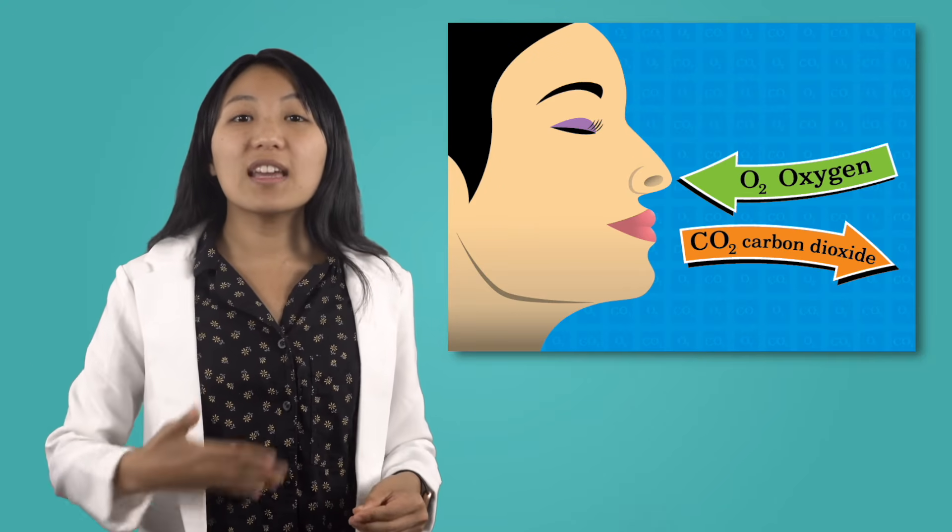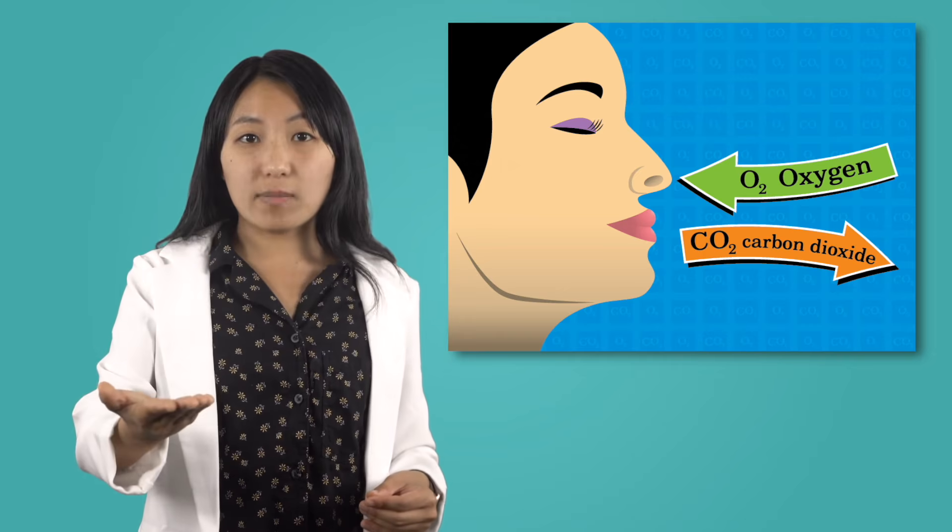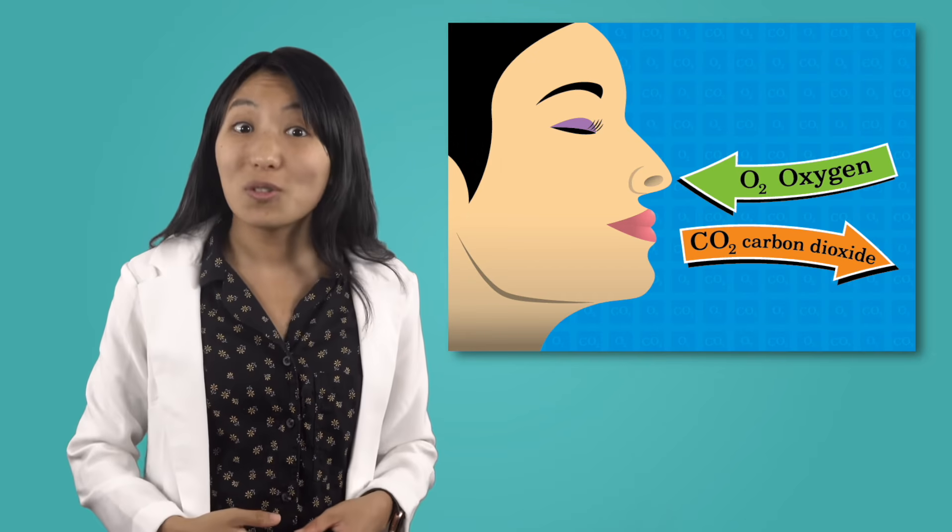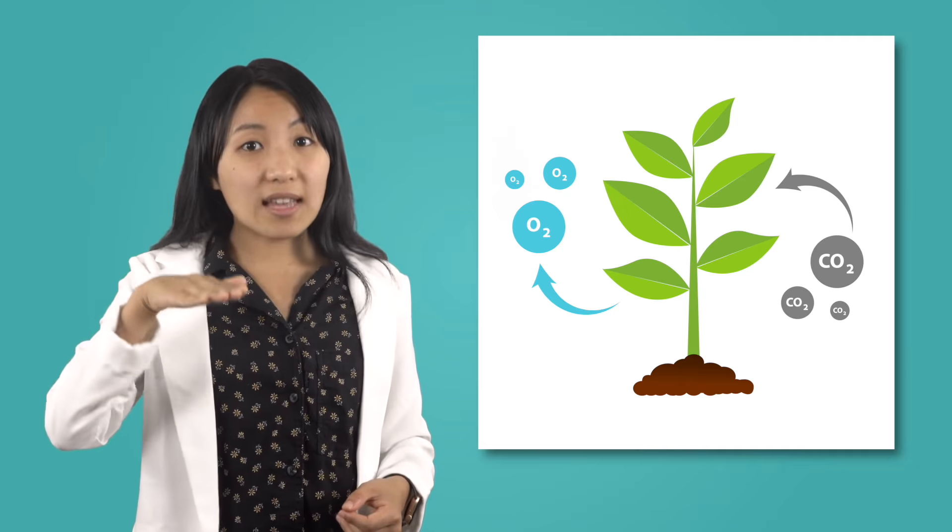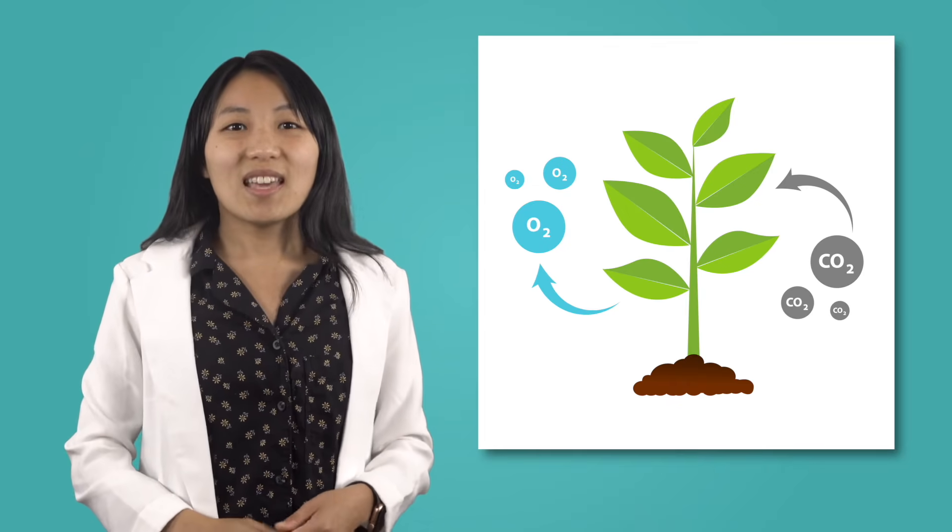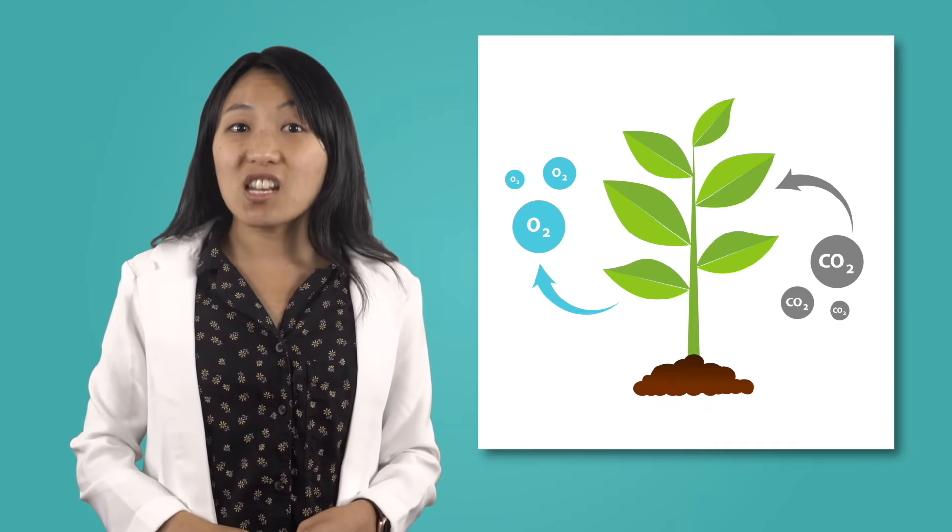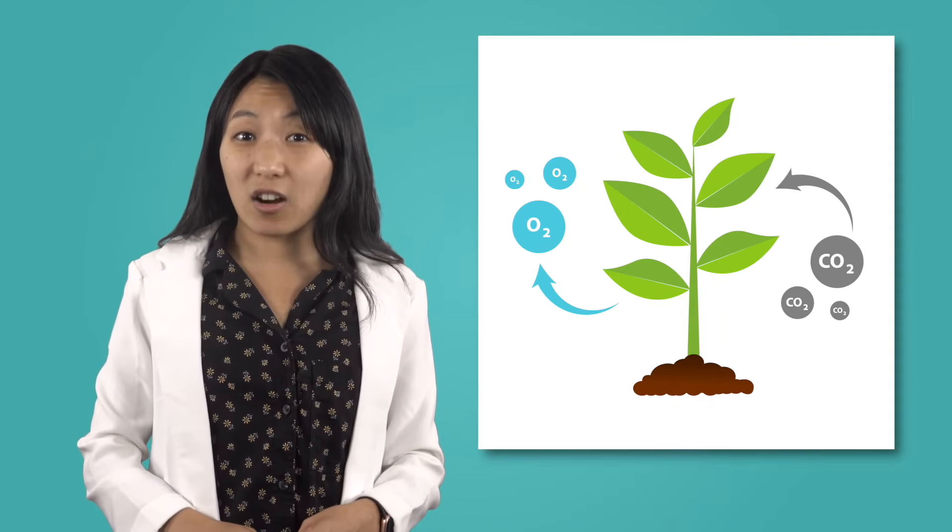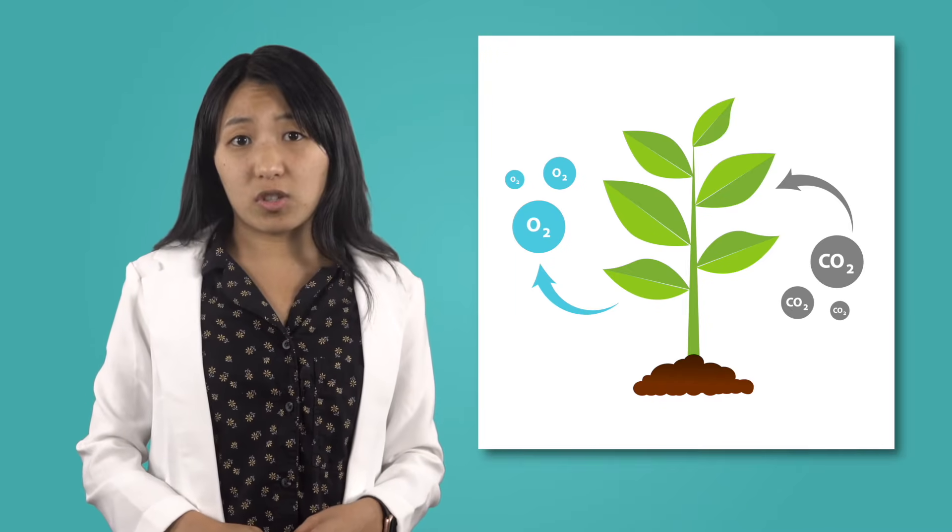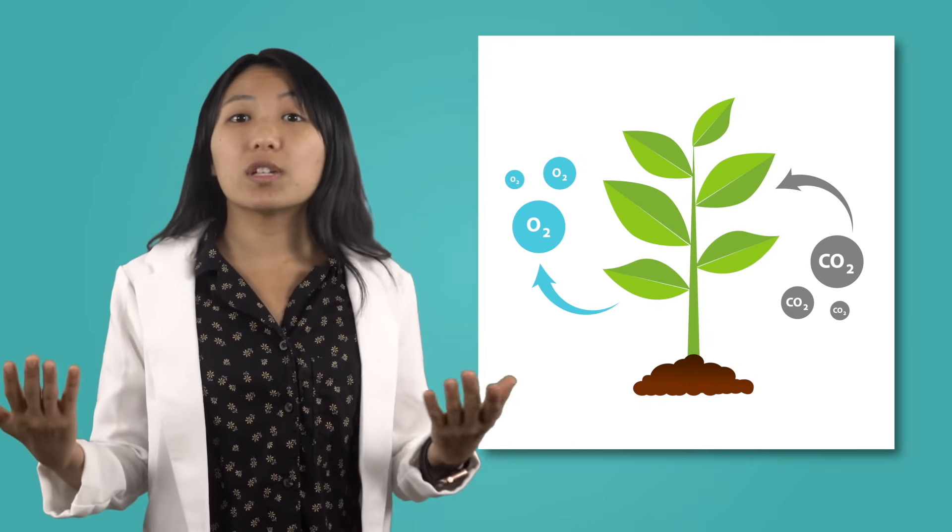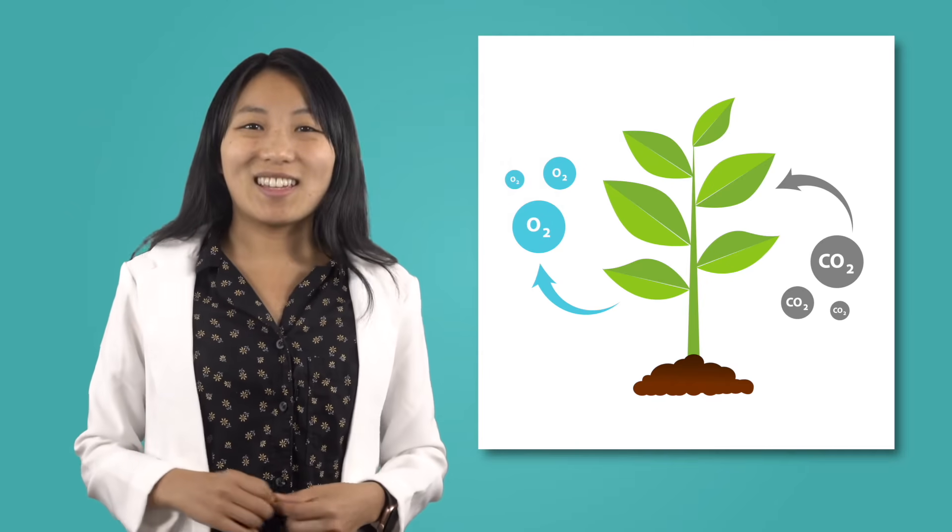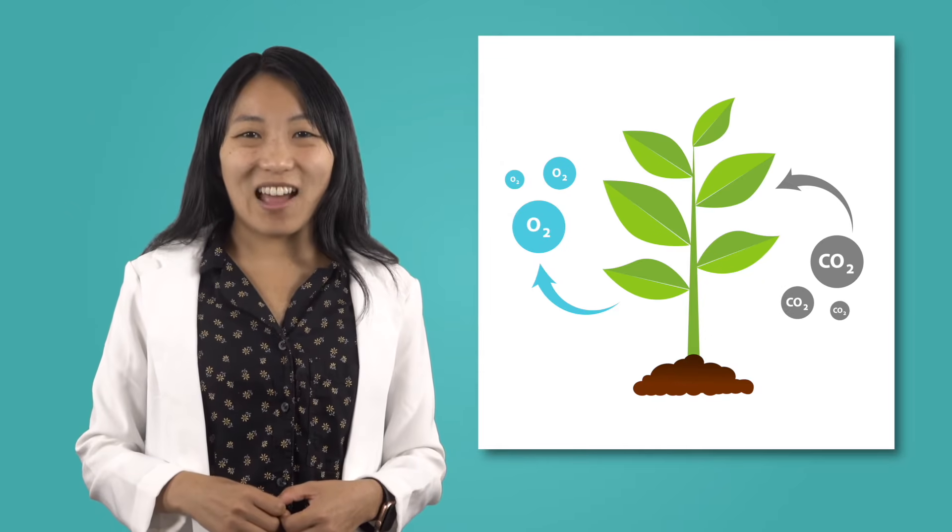Animals breathe in oxygen and breathe out carbon dioxide. Plants do the opposite. They breathe in carbon dioxide and breathe out oxygen. If a living thing doesn't get enough of these gases in the air it will not be able to survive. So even though different living things use different parts of the air, all living things need air to stay alive.